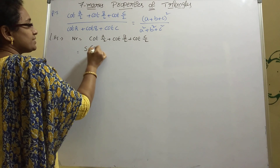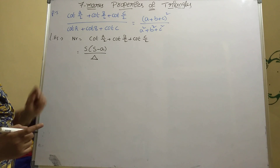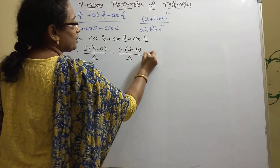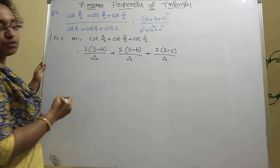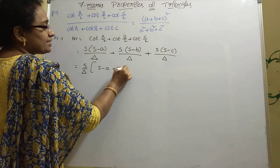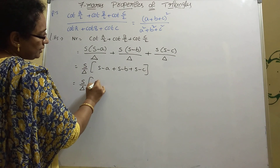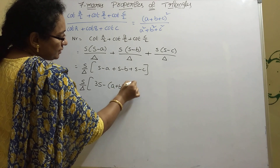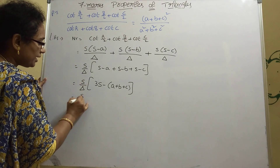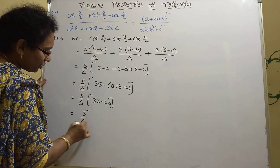The formula for cot(A/2) in terms of area Δ is: cot(A/2) = s(s−a)/Δ. So the numerator becomes: s(s−a)/Δ + s(s−b)/Δ + s(s−c)/Δ. Factor out s/Δ: (s/Δ)·[(s−a)+(s−b)+(s−c)] = (s/Δ)·[3s−(a+b+c)]. Since a+b+c = 2s, this gives (s/Δ)·(3s−2s) = s²/Δ.